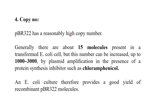Copy number is an important feature of pBR322. Generally there are about 15 molecules present in transformed E. coli cells, but this number can be increased up to 1000 to 3000 by plasmid amplification in the presence of a protein synthesis inhibitor such as chloramphenicol. This amplification provides a good yield of recombinant pBR322 molecules.